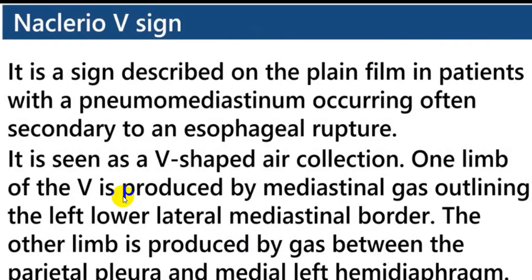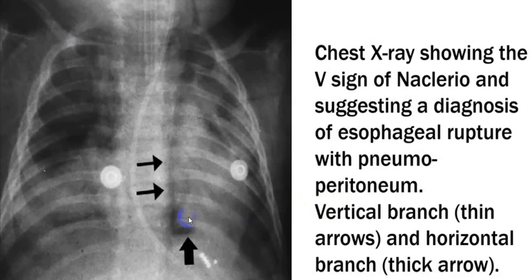In relation to pneumomediastinum, there is the Naclerio V sign: air collected because of esophageal rupture resulting in pneumomediastinum creates a V shape at the cardiophrenic angle — a vertical thin-arrow branch and a horizontal thick-arrow branch. You can see this V sign due to air trapped in the mediastinum.